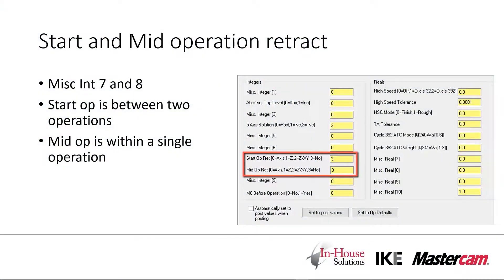In this video, we're going to be taking a look at miscellaneous integer number seven and number eight, which control the start and mid operation retract motion. Start and mid operation retract refers to the two scenarios where we can have a null tool change. The start case refers to the start of an operation or between two operations, while the mid refers to within a single operation. The best setting for either of these misc values is going to vary based on the shop, the machine, and the part that you're trying to cut, so it's important to be able to use them to their full ability.